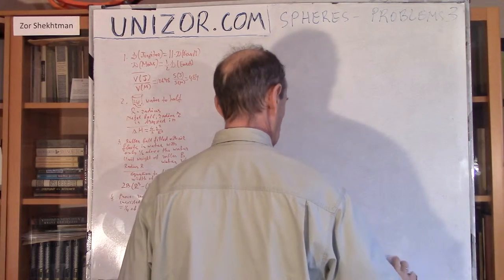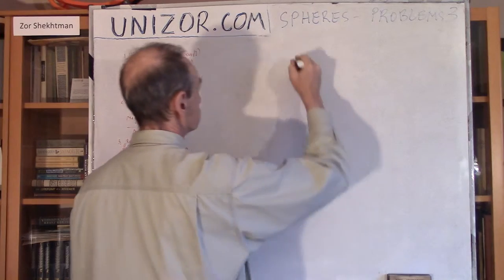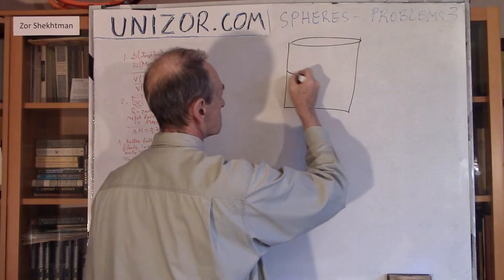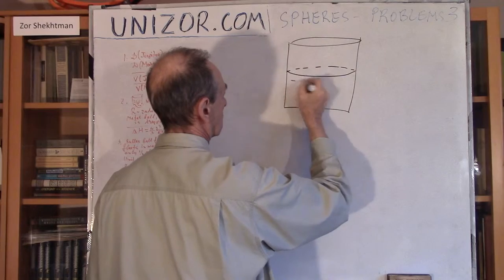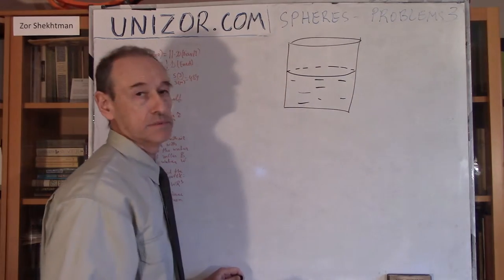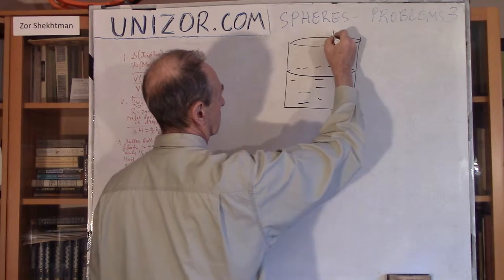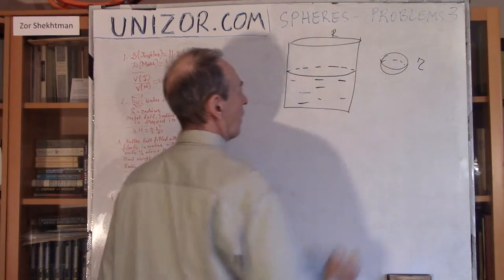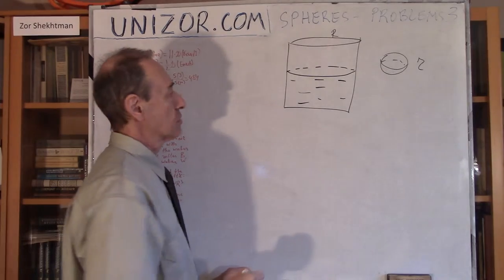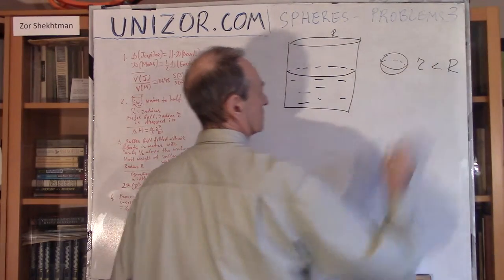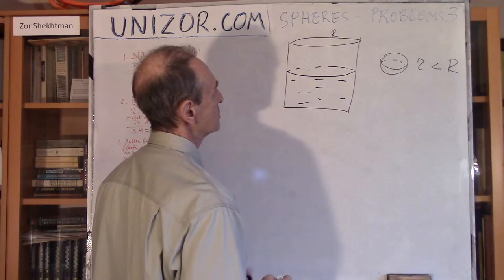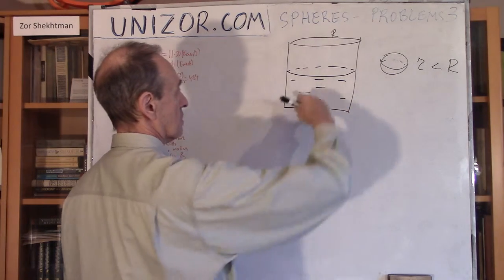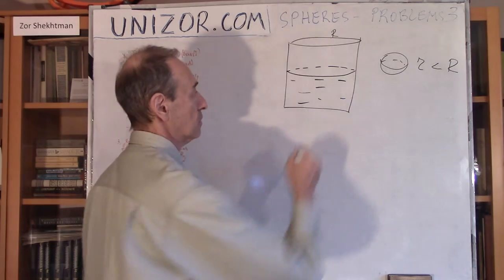Next problem. We have a glass of water of cylindrical form, and it's filled up with water to half of it. The radius of the cylinder is R. Then we have a metal ball of radius r, and we drop it into the glass. The radius of the ball is less than the radius of the cylinder. The question is: by how much will the level of water rise when I drop this ball in?